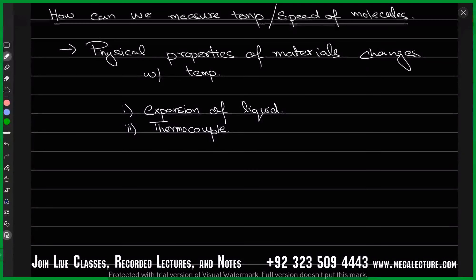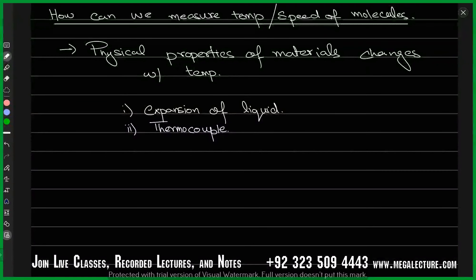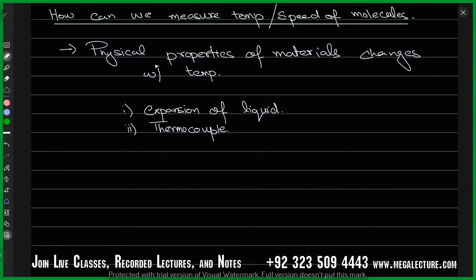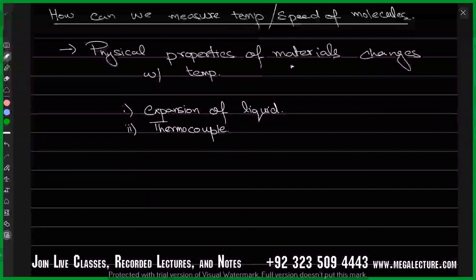We're doing the topic of thermal physics or thermodynamics, and our last discussion was on a thermometer - how do we measure temperature. There are different ways to measure temperature. The thing that will help us is the physical properties of different types of materials. For example, mercury is a material and its physical properties - its melting and boiling points - are very helpful in measuring temperature. This all comes under the expansion of a liquid.